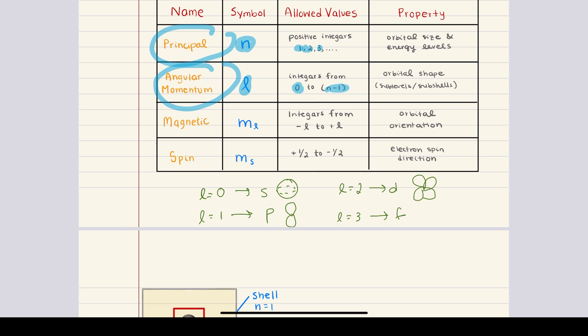The third quantum number is the magnetic quantum number, represented by the symbol ml. The magnetic quantum number specifies the orientation of an orbital, and it also determines how many orbitals exist in a subshell. The rule for this is that ml can take on any value between negative l to positive l. For example, in a p subshell where l is equal to one, the magnetic quantum number can have values of negative one, zero, and positive one — so there are three values of ml.